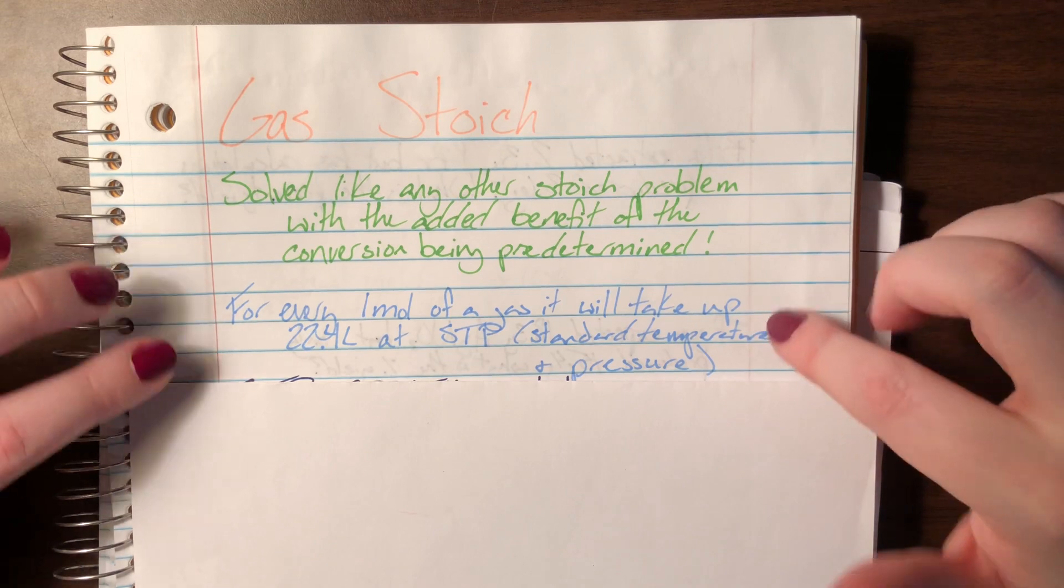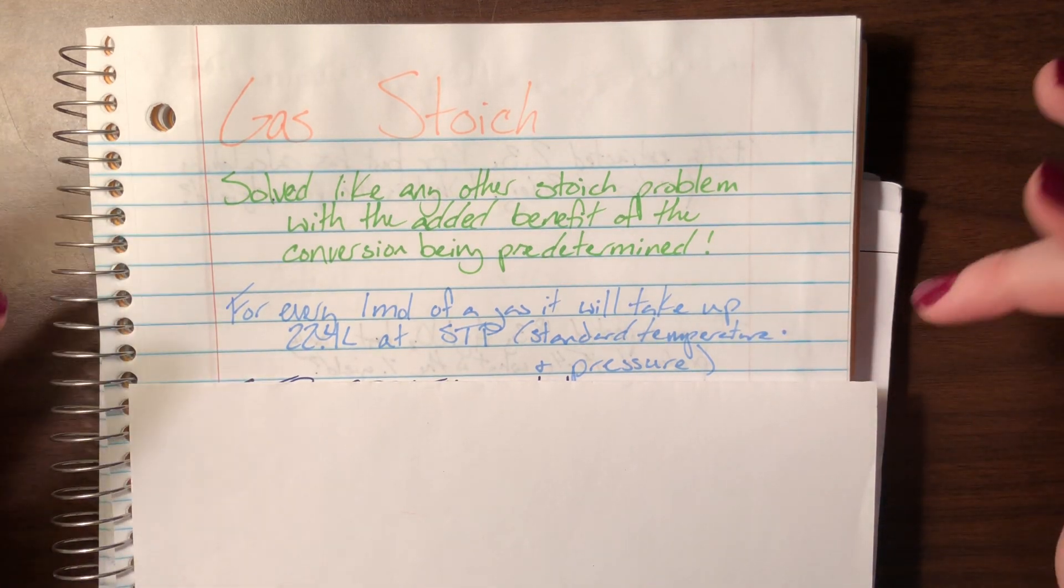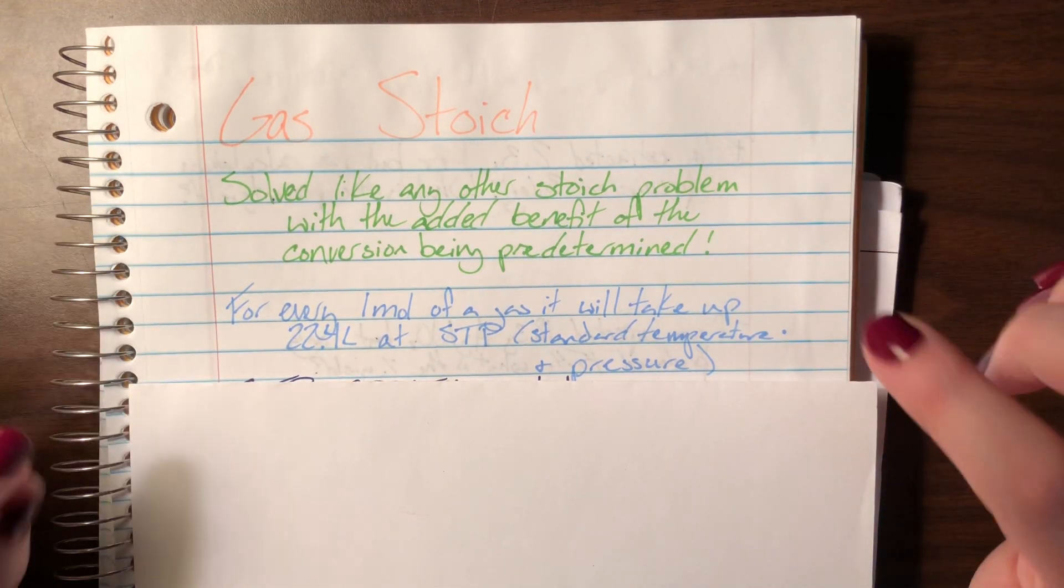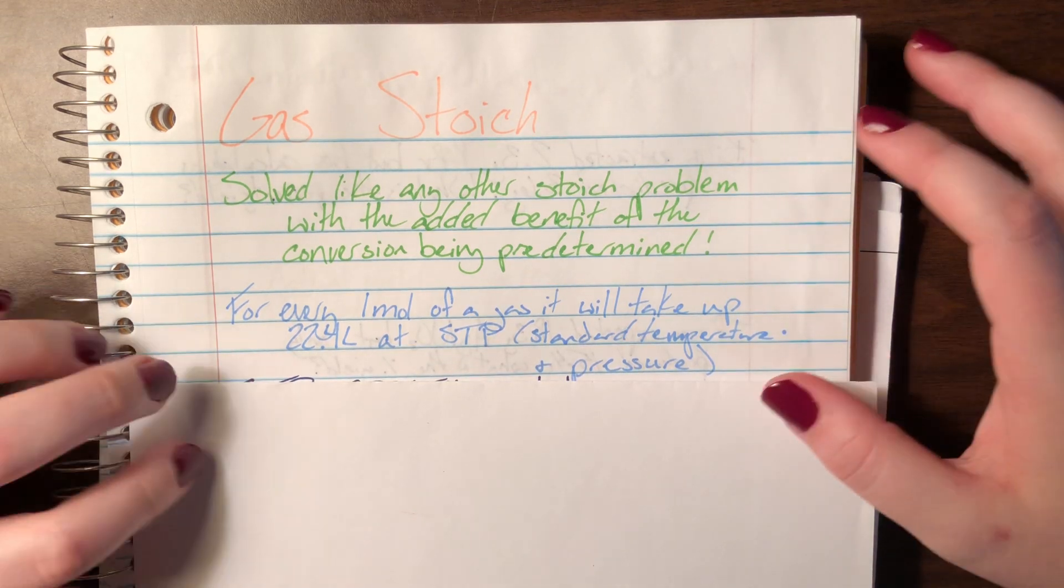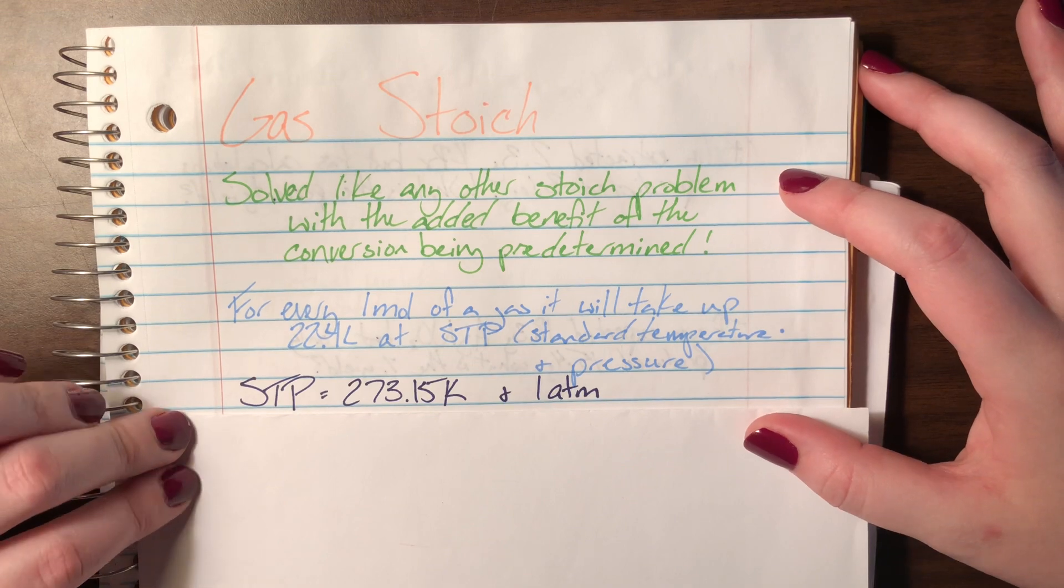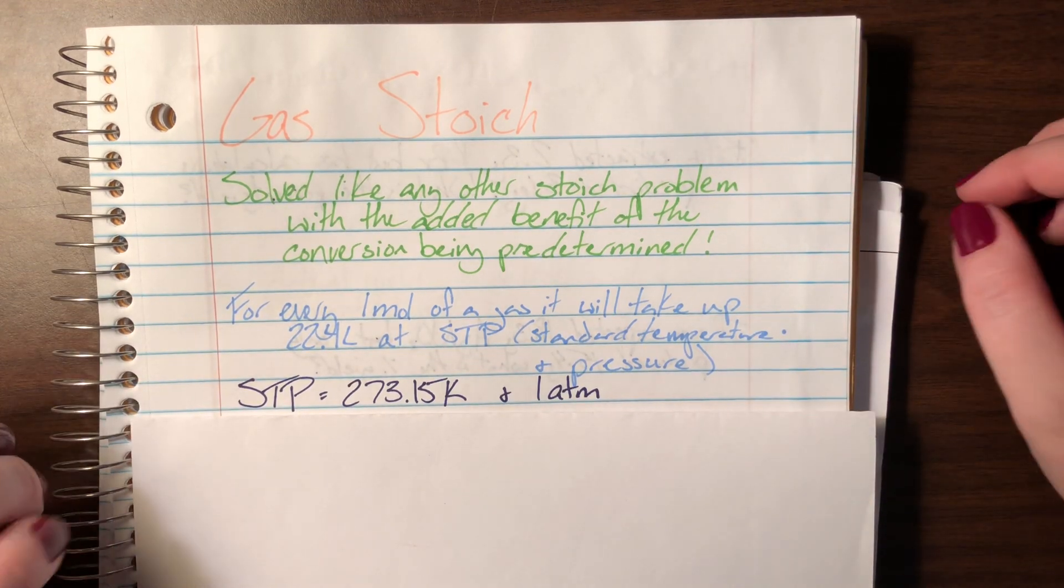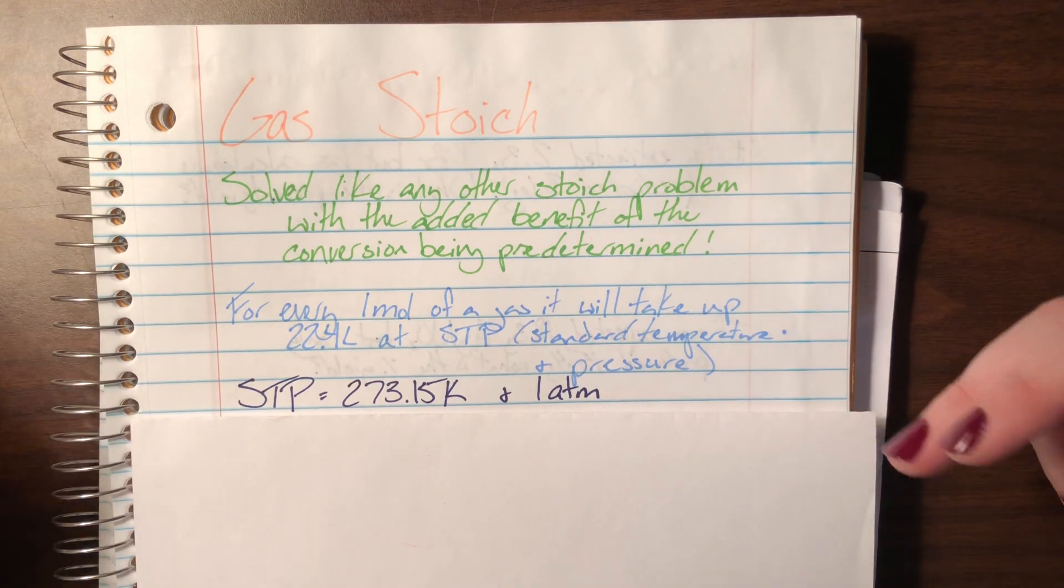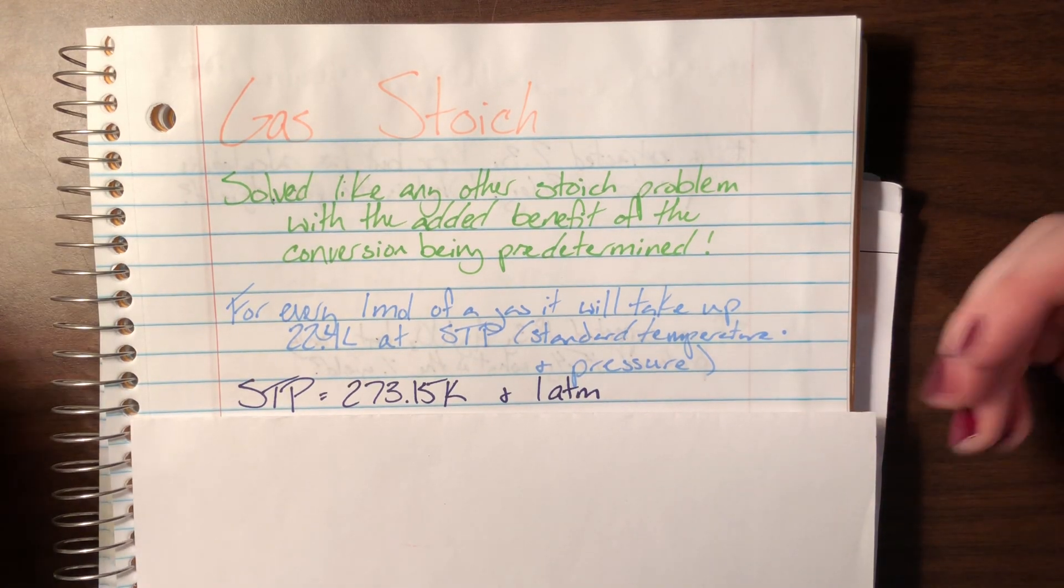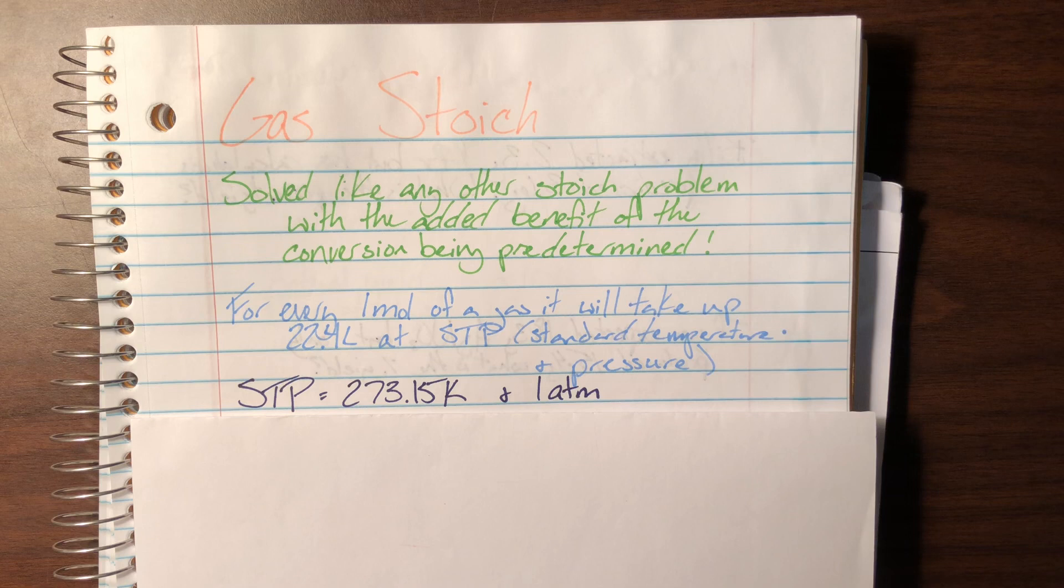STP means standard temperature pressure. Now what STP actually is, what the standard temperatures are and what the standard pressure is, is this. Standard temperature pressure means that my temperature is 273.15 kelvin and my pressure is one atmosphere.